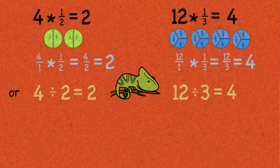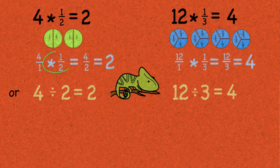In both situations, I got the same answer, so there must be a connection between multiplying and dividing. In the first example, we saw that 4 times a half was equivalent to 4 divided by 2. And in the second, that 12 times a third is equivalent to 12 divided by 3.